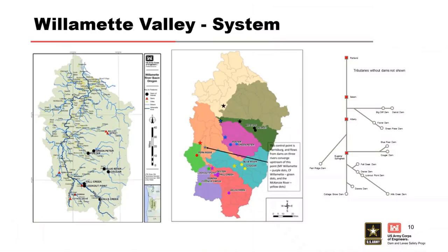The first step of a system risk approach is to define the system. The figure on the left shows all the structures and rivers in the Willamette Valley. We have to define where the structures are and their relative location in the valley. The figure in the middle shows the hydrologic basins, and the figure on the right shows a schematic of how all the dams in the valley relate to the system as a whole. We list out all the structures and which population centers they affect.